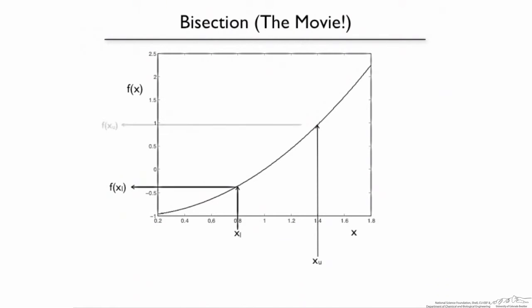So we've got our bounds, draw the function, and we can see that the sign changes when we go from one bound to the other. Now, if the graph was tilted the other direction — sloped down instead of sloping up — then the upper bound would have a negative function value and the lower bound would have a positive function value. But in any case, they would still have a switched sign. Now, what's the approximate error at this point? Well, it's just the width of the interval — the difference between the last two guesses. We know that the true error is less than that, because the true answer is somewhere in between those bounds, so the distance between either of those guesses and the true x — the root of the function — is less than the distance between those two points.